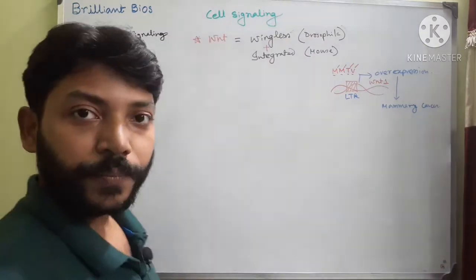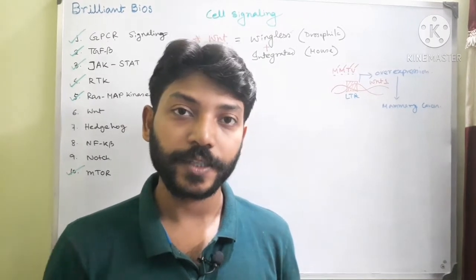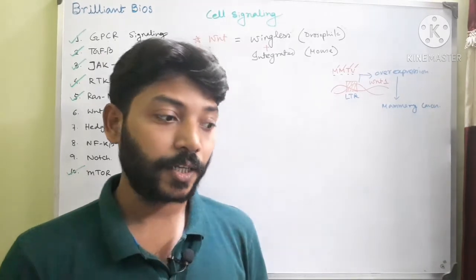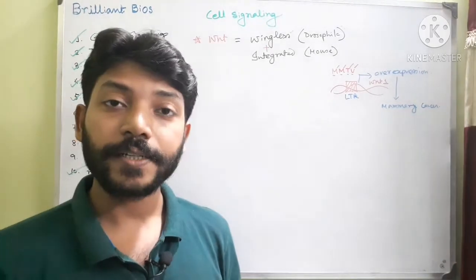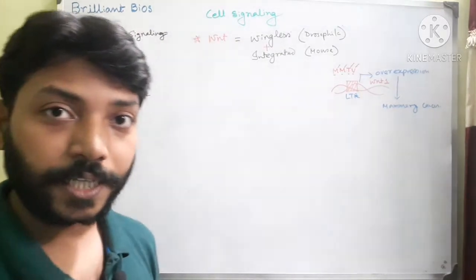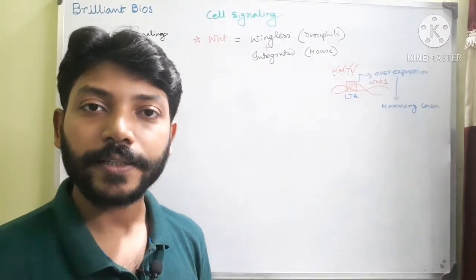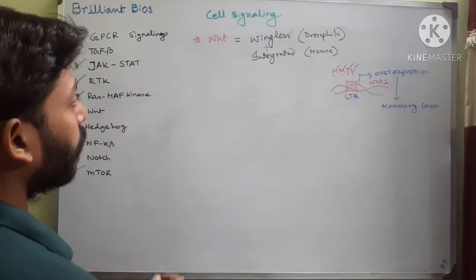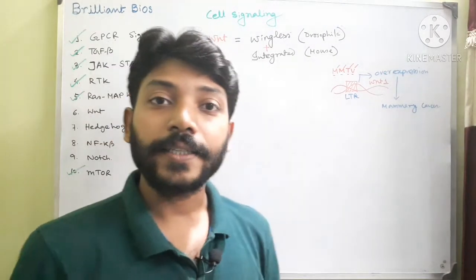This Wnt pathway actually plays a diverse role in cells. One is cell proliferation — it helps in cell proliferation in stem cells. It can determine cell polarity, it can guide cells like mesenchymal cells, it can control the urogenital system of vertebrates, it can help in limb patterning and organogenesis. So there are so many functions performed by the single Wnt pathway, so it is very important.